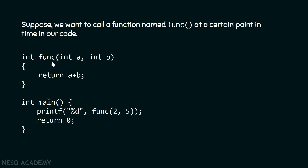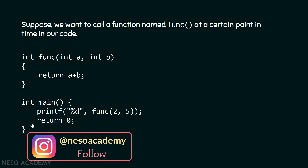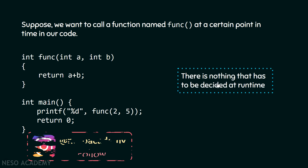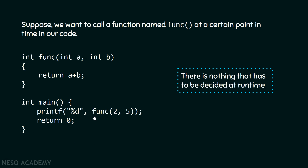We have this function func which is capable of performing addition. Within the main function, we are calling this function at a specific point in time — it is hard coded. This function has to be called at this point, when the printf function is called. The user does not decide at runtime; it is decided at compilation time that this function has to be called.